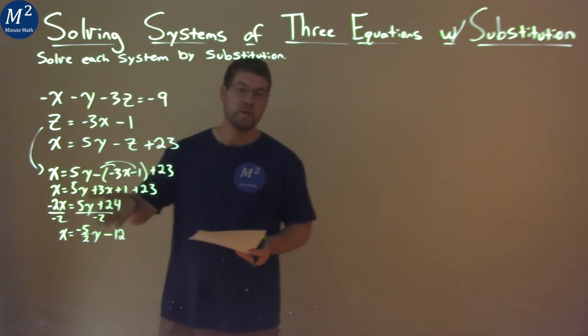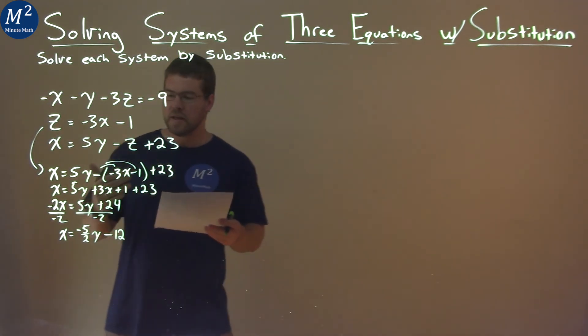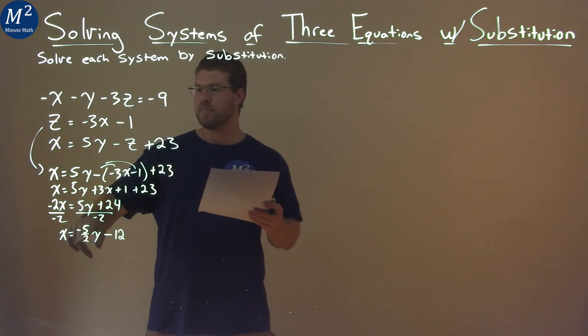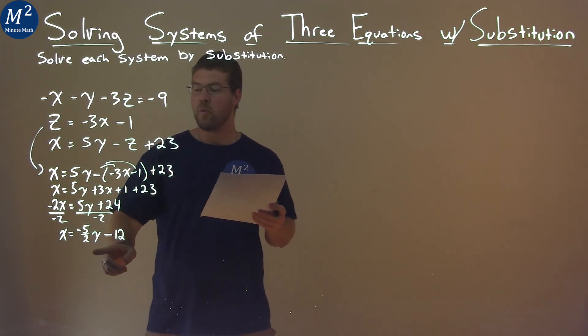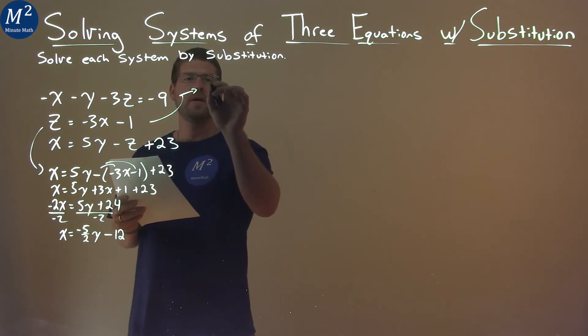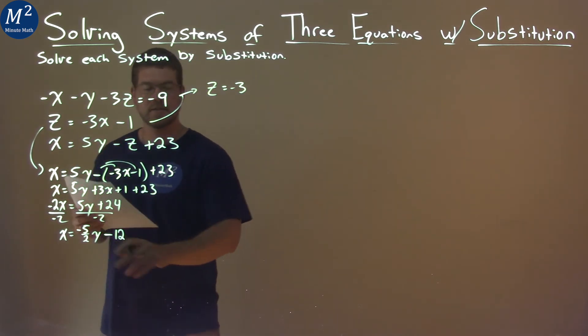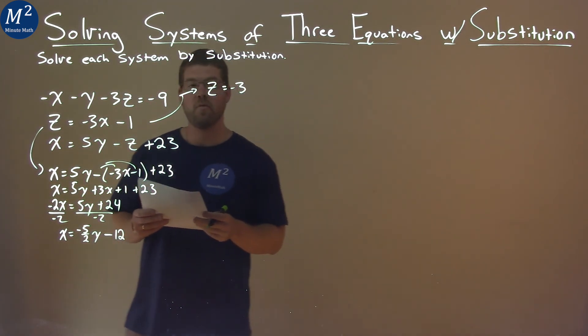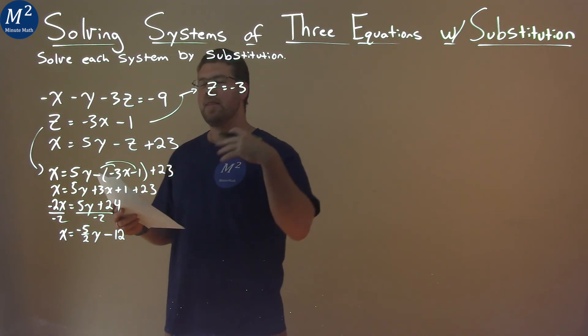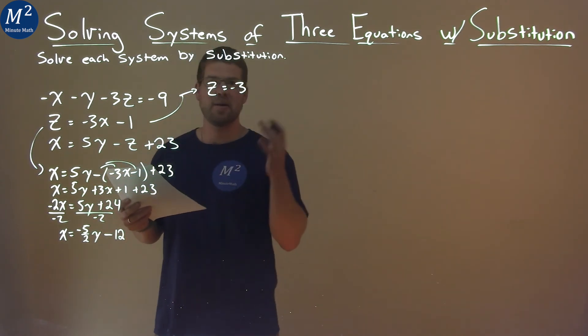So now we have x by itself in terms of y, but where can we go from here? Well, what I'm going to do now is we want to get this z in terms of y. So I'm going to take that equation for z up here. Again, z equals negative 3, and instead of x I'm going to put this in terms of y. So we're trying to find x in terms of y and z in terms of y, and then we'll be able to substitute that in later to finally get y by itself.